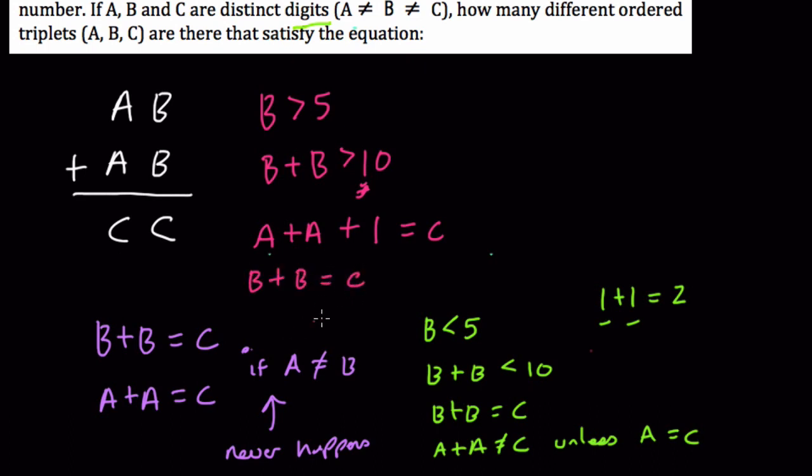we know that B plus B would equal C. Well, this is not possible either because this implies that odd is equal to even. Let's say B equals 6. Well, let's say B is greater than or equal to 5. That'll be better. If B equals 5, then what?